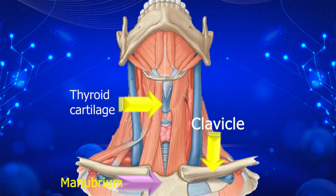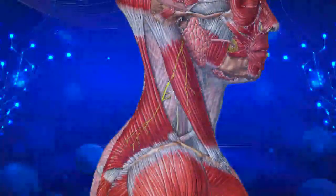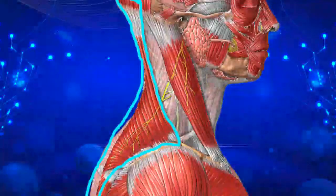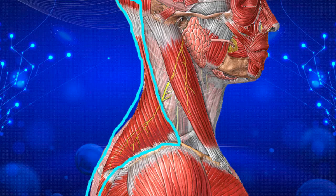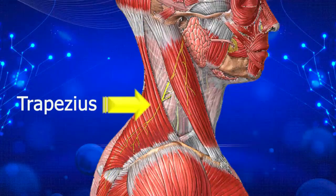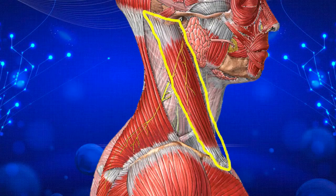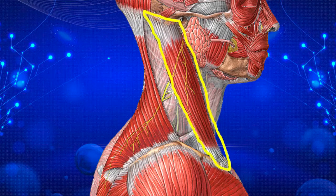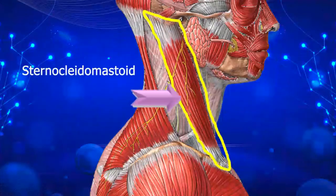Now let's look at some of the soft tissues that will also be relevant in describing the various triangles. The first is this triangular muscle running from the occipital bone down to the lateral part of the clavicle. This muscle is called the trapezius. The next muscle is this big muscle at the side of the neck running from the mandible and clavicle to the mastoid process. This big muscle is called the sternocleidomastoid muscle.